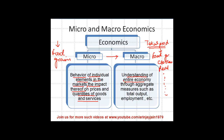So macroeconomics is about understanding the complete economy through aggregate measures like total output or total production. Employment is another example — we frequently get data which says that unemployment in the US is 10% or 12%. So we are trying to understand why there is unemployment, and if this is the case, how can we remove it or reduce it? That is what is being analyzed as a part of macroeconomics.